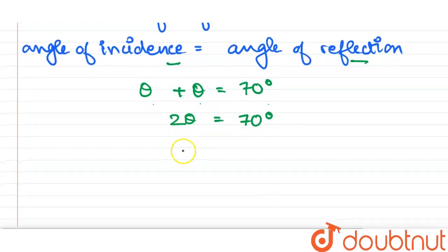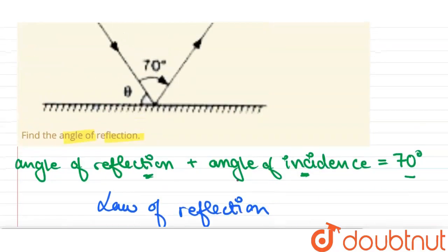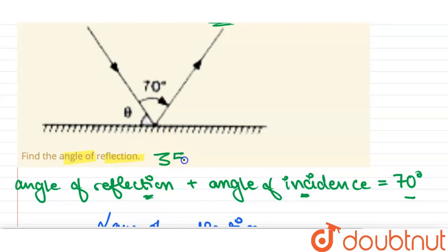That is, theta is equal to 35 degrees. This is the angle of reflection. So, angle of reflection is 35 degrees. That's all. Thank you.